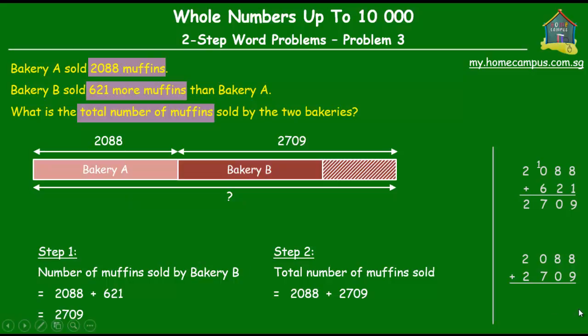8 and 9 is 17, 1 plus 8 is 9, and 0 plus 7 is 7, and 2 plus 2 is 4. So they sold a total of 4,797 muffins.